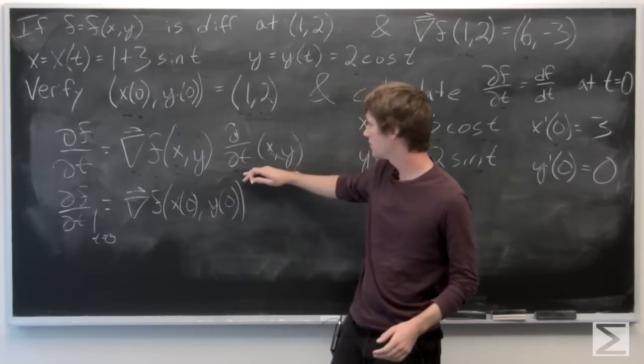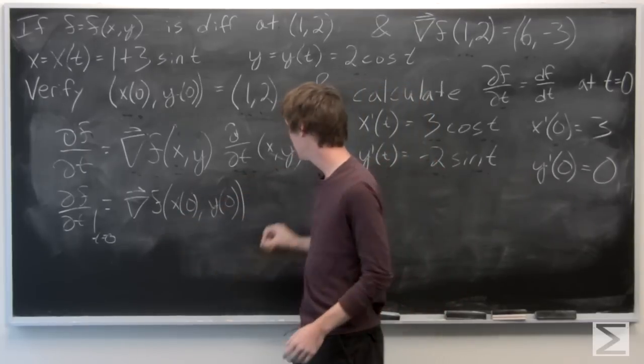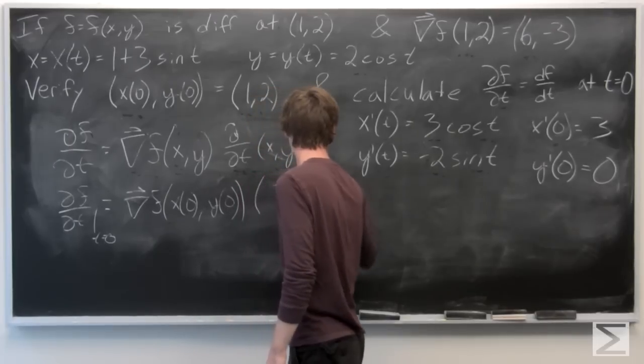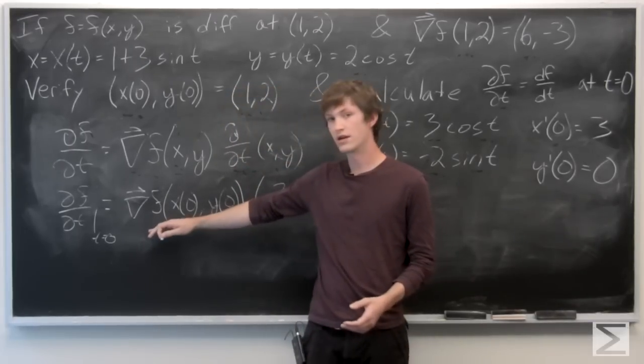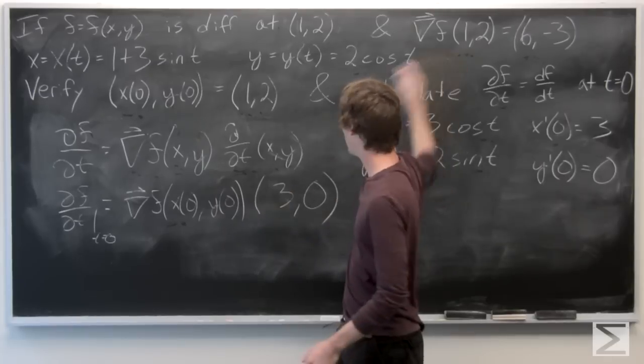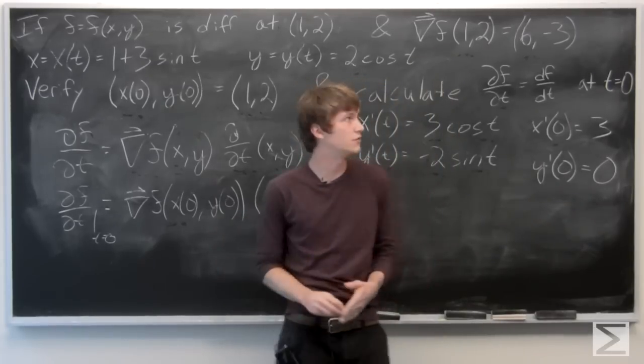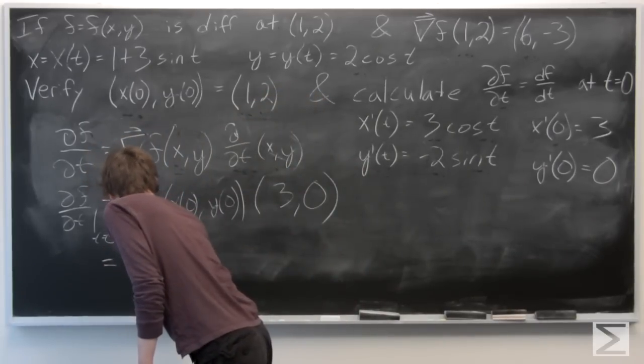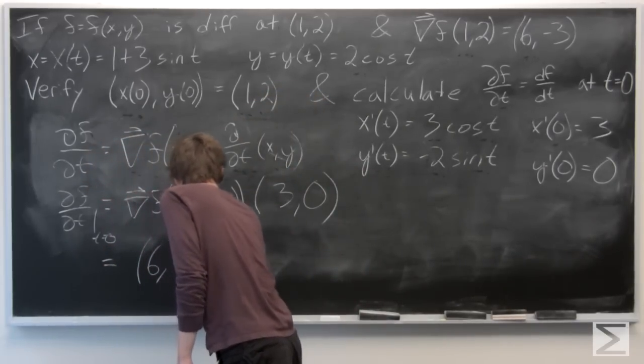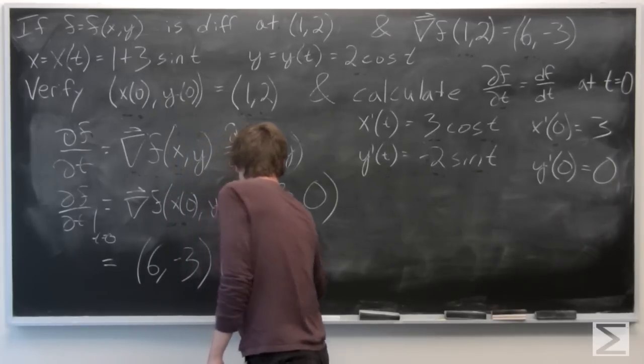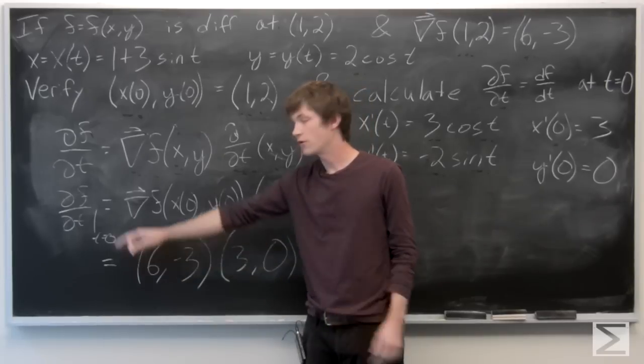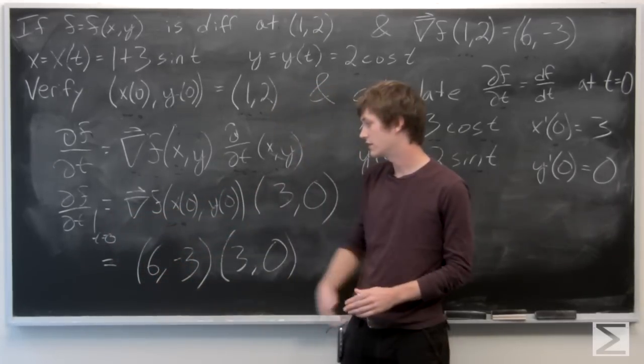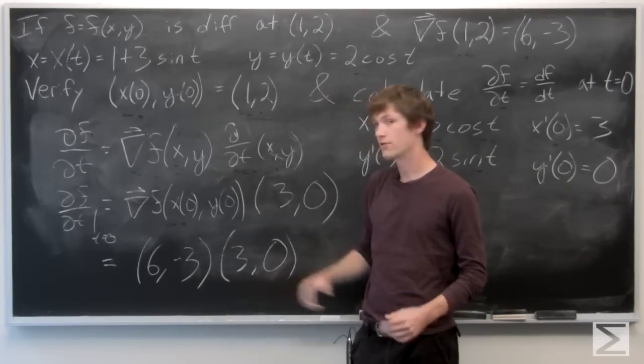So now we can plug this in, evaluate it at t. And we know that the gradient vector at the point (1, 2) is equal to (6, -3). So we get that the partial derivative of f with respect to t at t equals 0 is equal to the vector (6, -3) dotted with the vector (3, 0), which equals 18.